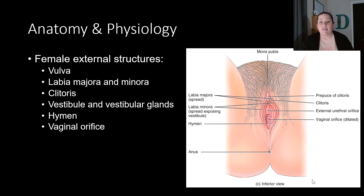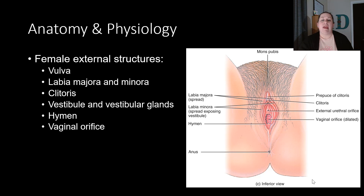We have the vestibule and vestibular glands — this is the opening going towards the vagina itself. This area has glands that help produce mucus, which protects the vagina from foreign invaders and also lubricates for intercourse. The vaginal orifice is also here, which is the opening into the vagina. You will notice in this picture that the urethra is a completely separate opening from the vagina. The urinary system and reproductive system are not combined in females, though they do share a common exit in males.